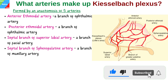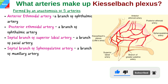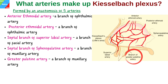The septal branch of the sphenopalatine artery, which is a branch of the maxillary artery, enters the nasal cavity through the sphenopalatine foramen to supply the septal wall of the cavity. The greater palatine artery, also a branch of the maxillary artery, passes through the greater palatine foramen and travels along the hard palate to enter the nasal cavity by way of the incisive canal, thus joining the anastomosis at Kieselbach's area.